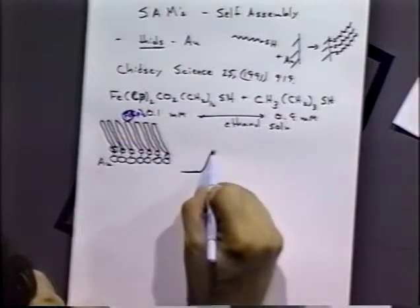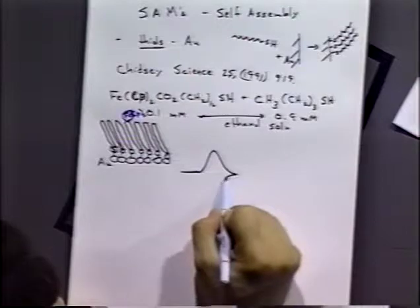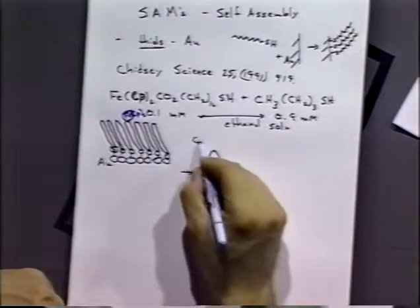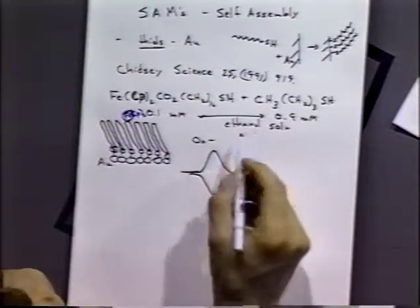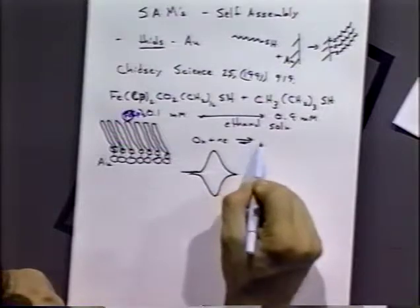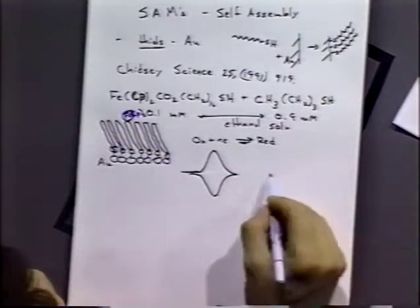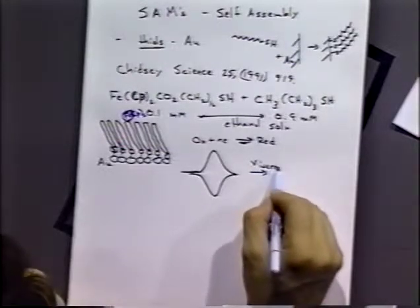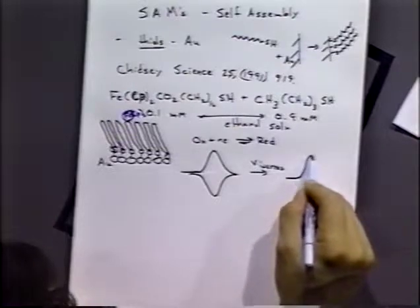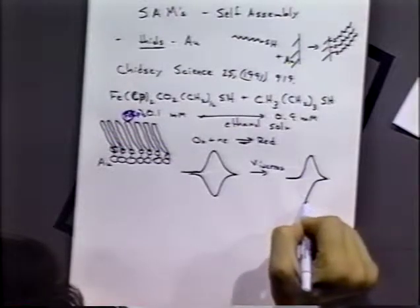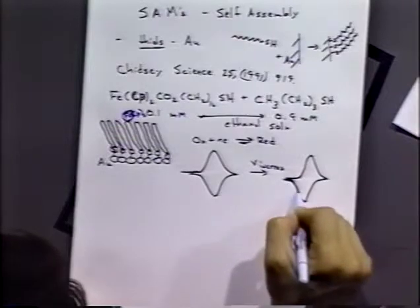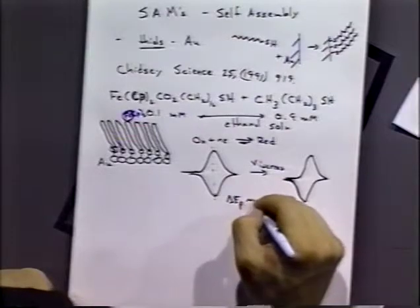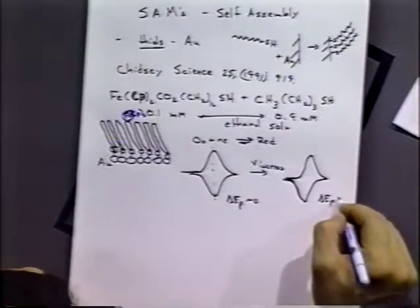If Chidsey does the experiment very slowly, you see the wave that you'd expect for a surface-bound species, an absorption wave. So you get waves like this. If he speeds up the scan rate, you see the initial effects of electron transfer kinetics. And you don't see a symmetrical delta E peak approximately zero here. Now delta E peak greater than zero.